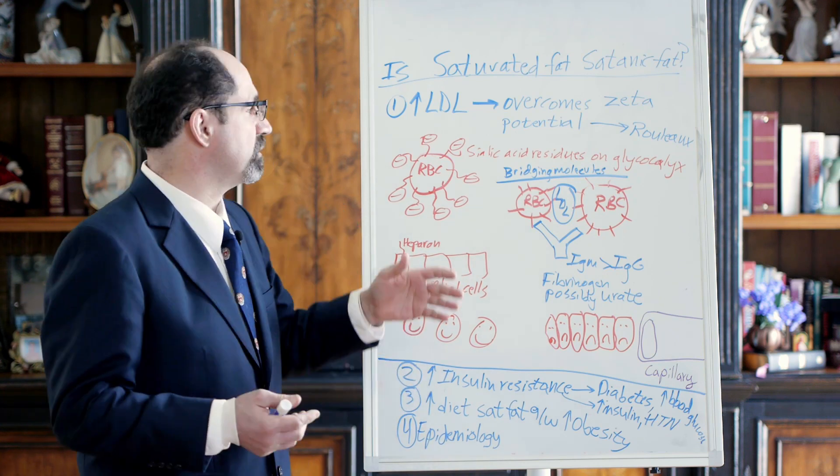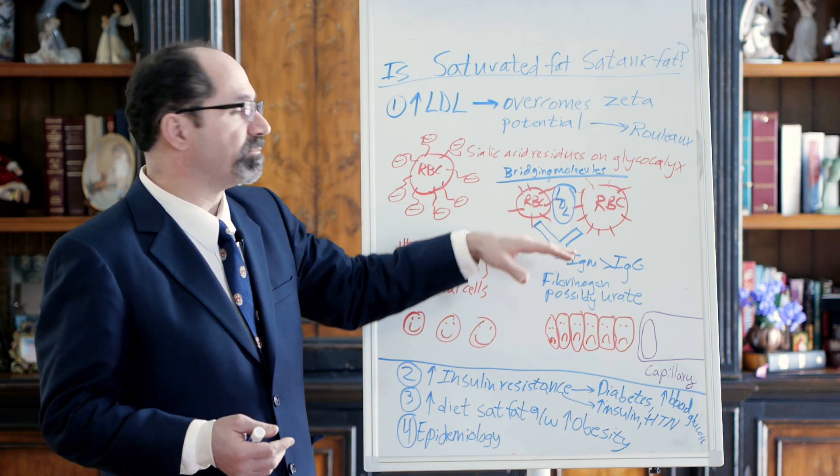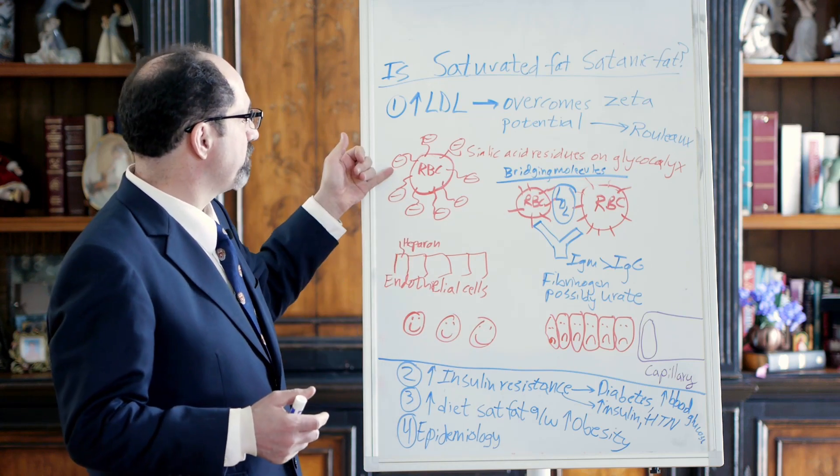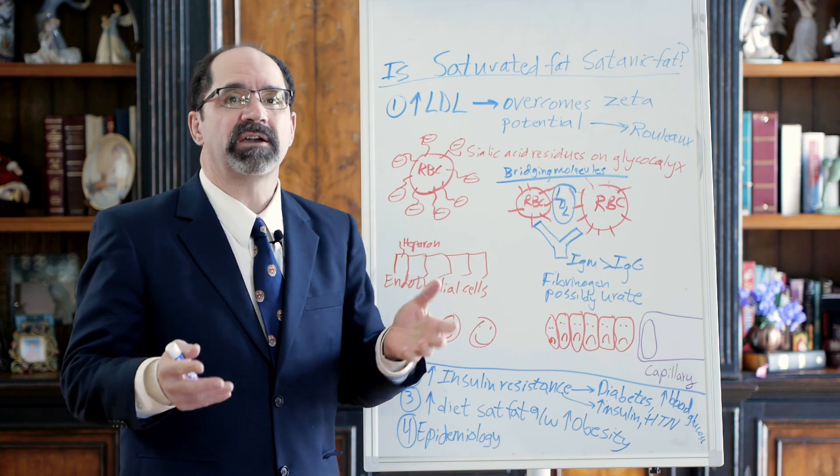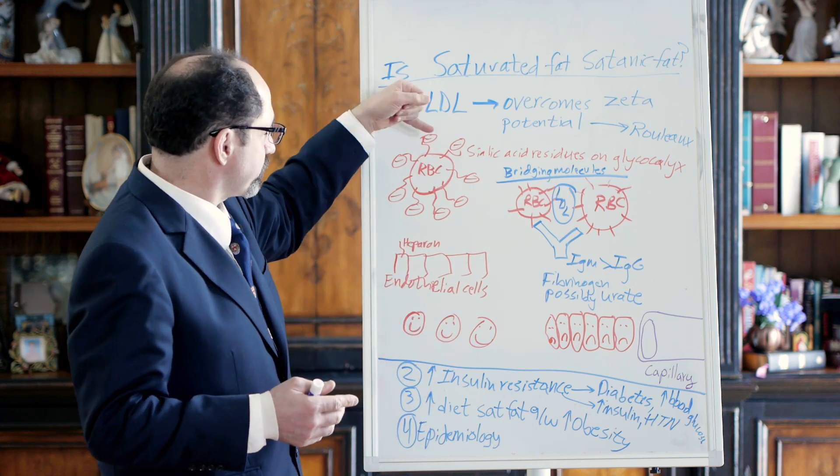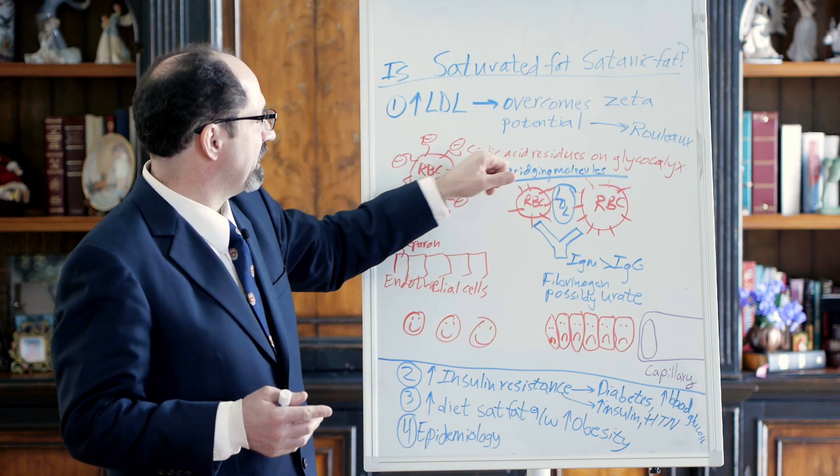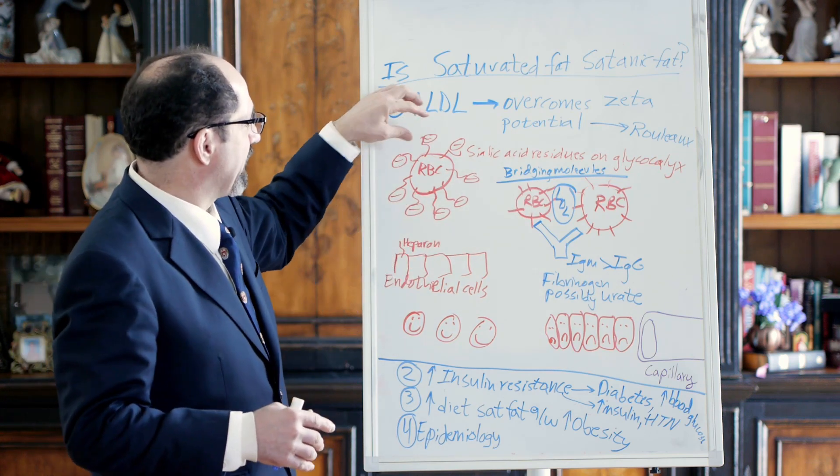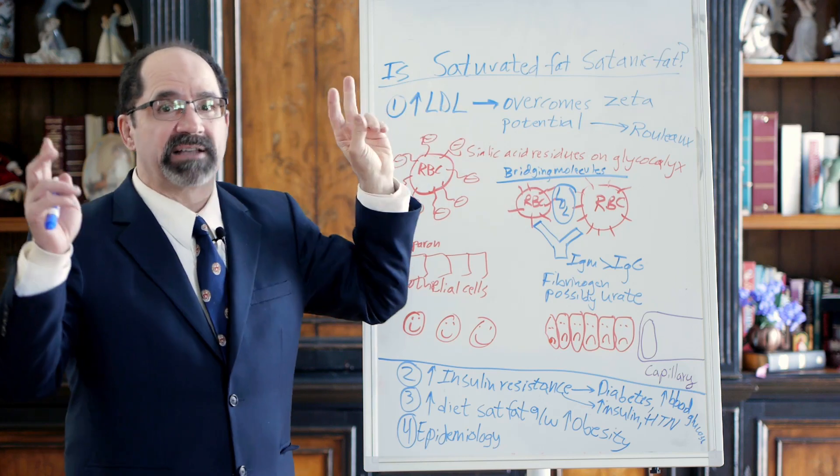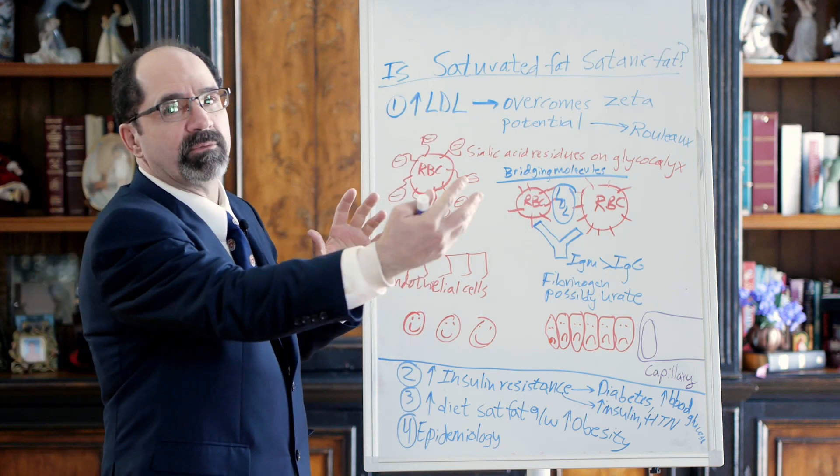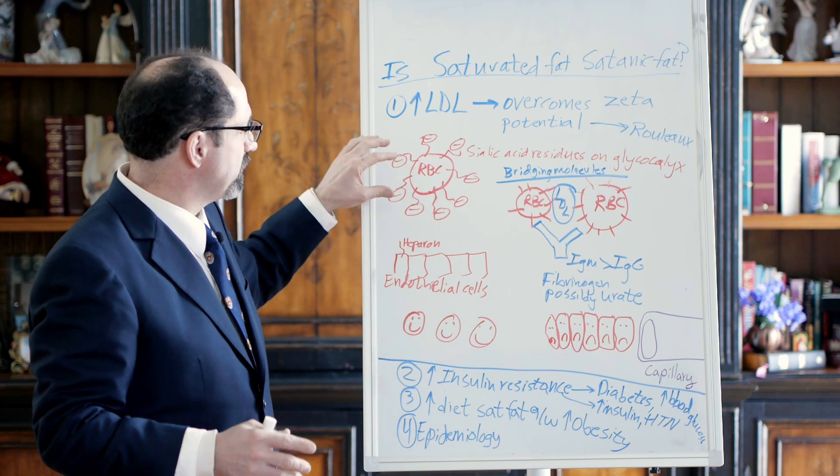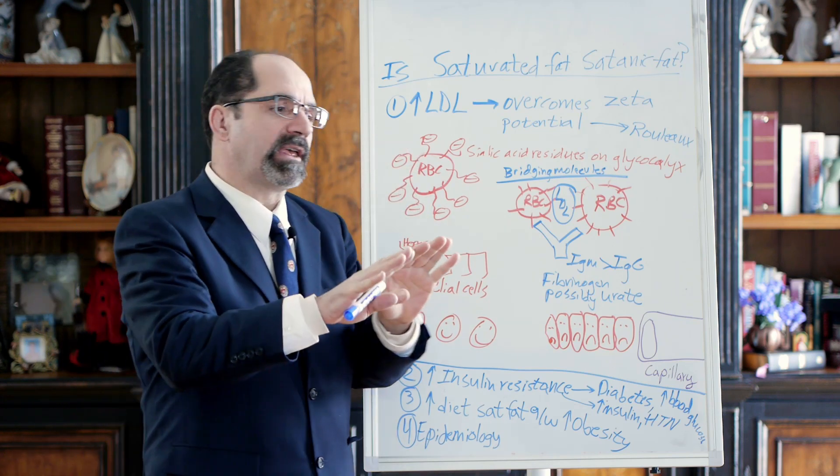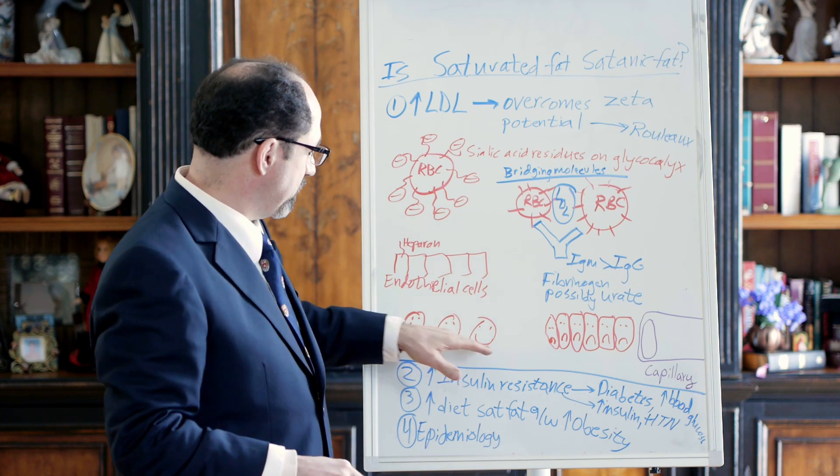LDL cholesterol is a bridging molecule. A bridging molecule is something that causes red blood cells to stick together. The mechanism of sticking together is red blood cells on their outer surface have what is called a glycocalyx. These are glycoproteins with sialic acid residues that have a negative charge upon them. Typically, the negatively charged sialic acids attract the positively charged sodiums, and outside of that will be the negatively charged chlorines. The point is normally the red blood cells, because of these negative charges, they repel each other and flow happily independently of each other.